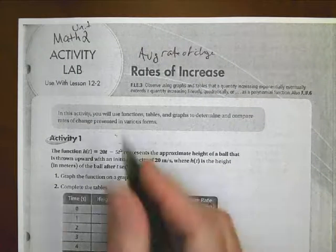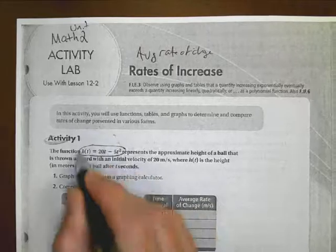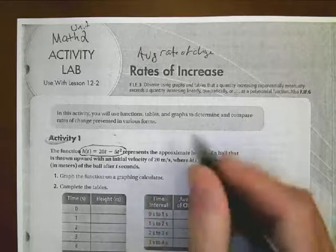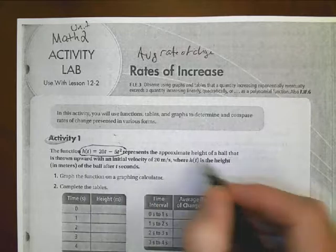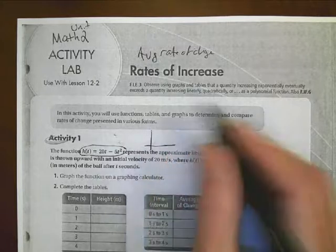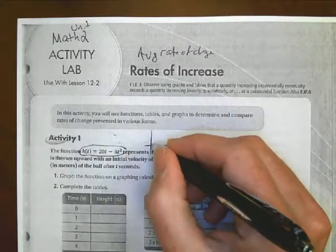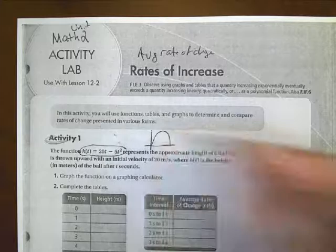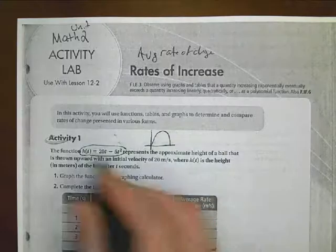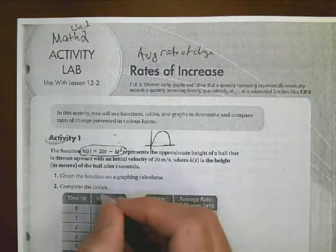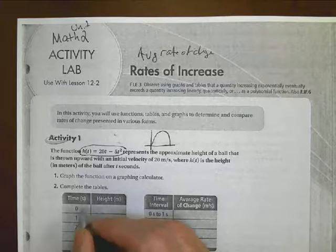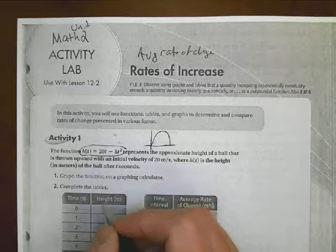First of all, we start off with a function, h(t) = 20t - 5t². And that's going to represent the height of the ball that's thrown up and has a velocity and the height that goes up and down. So it's a little bit like what we've done before. We have a ball, we're going to throw it up, and it's going to come down. It's going to do one of these kind of things because it's a quadratic function there. So what we want to do is complete the table. I'm going to skip the graphing calculator part for now, and we're going to complete the table.